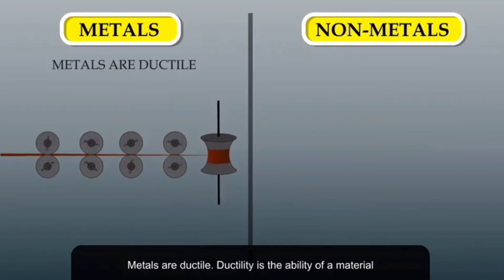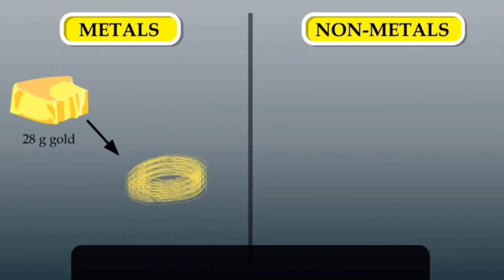Metals are ductile. Ductility is the ability of a material to be drawn into thin wires without breaking.